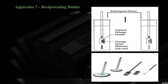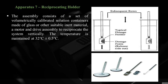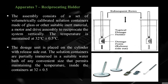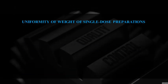Apparatus 7 — Reciprocating Holder: assembly consists of volumetrically calibrated solution containers made of glass or suitable inert material, a motor, and a drive assembly to reciprocate the system vertically. Temperature maintained at 32 ± 0.5°C. The dosage unit is placed on the cylinder with release side facing out. Solution containers are partially immersed in a water bath to maintain temperature at 32 ± 0.5°C.